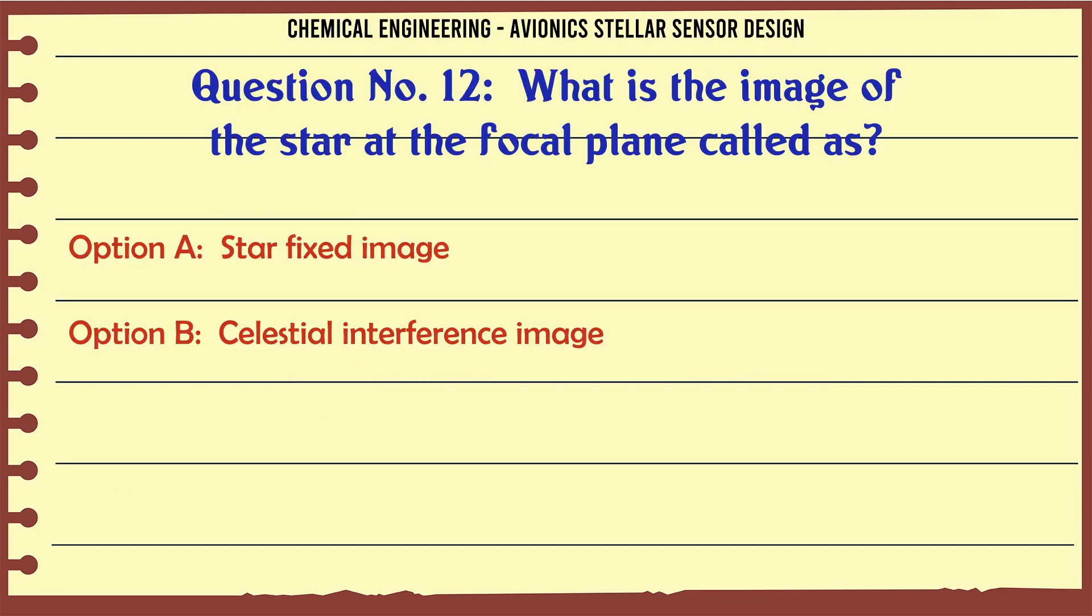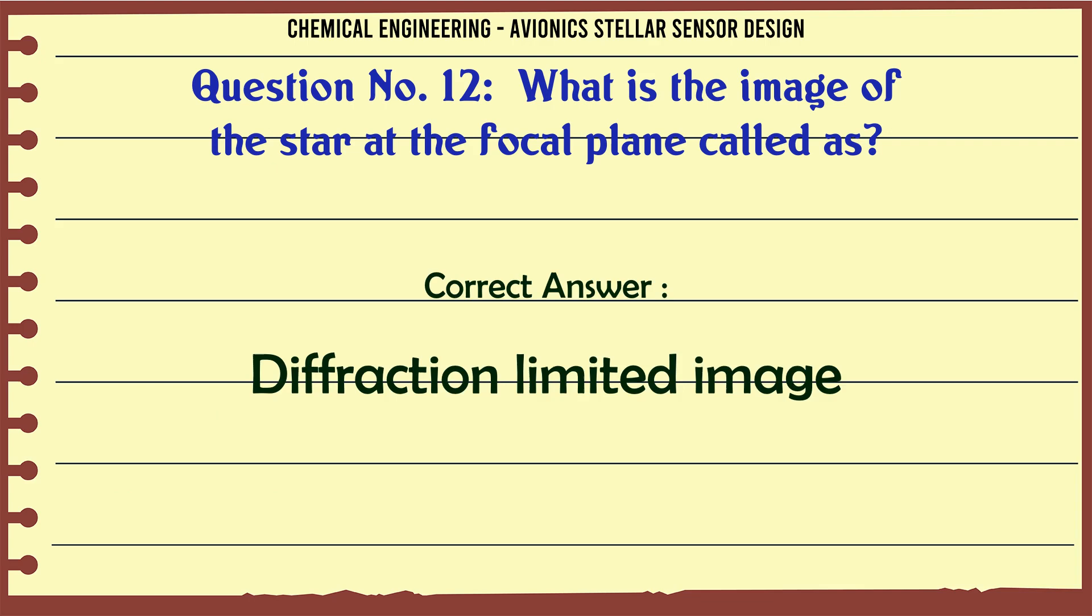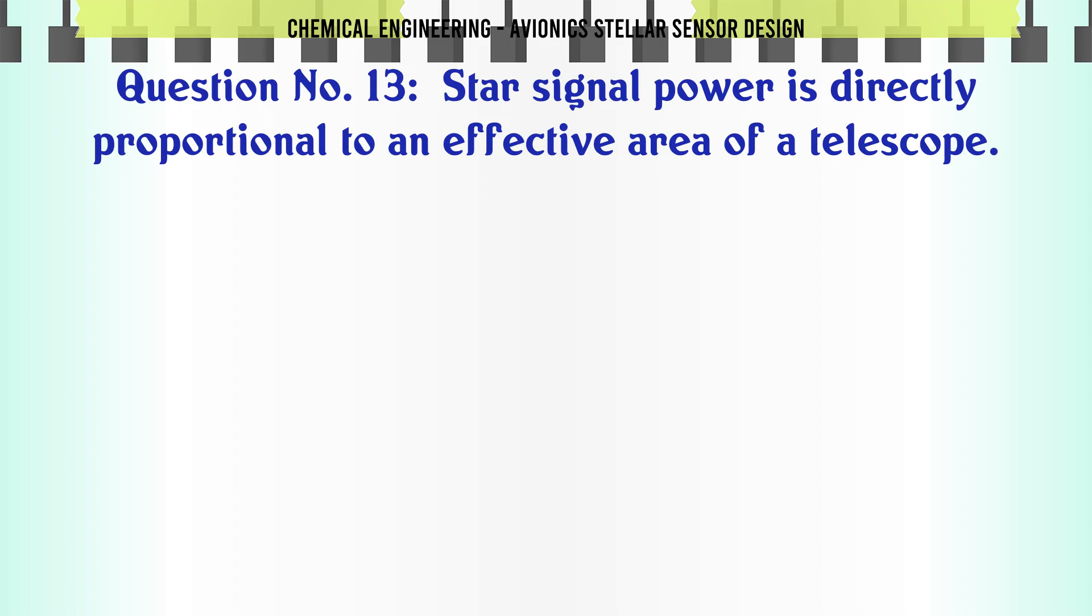What is the image of the star at the focal plane called? A. Star fixed image, B. Celestial interference image, C. Diffraction limited image, D. Spot image. The correct answer is Diffraction limited image.